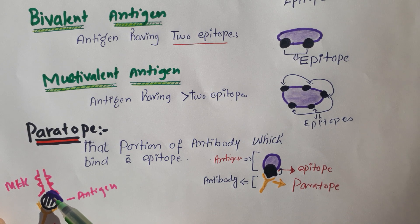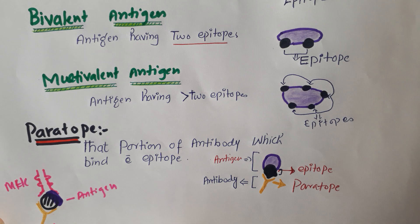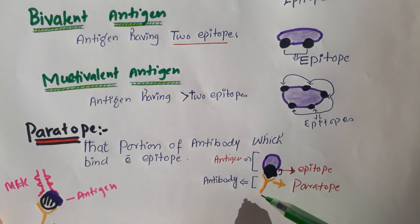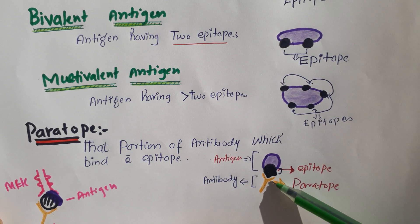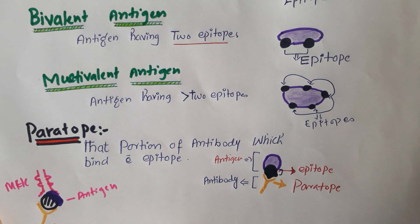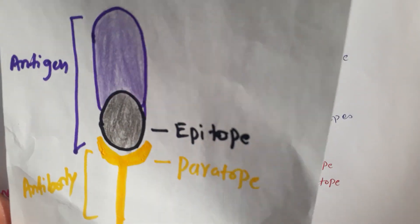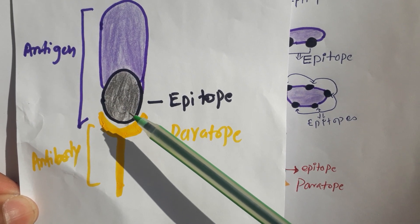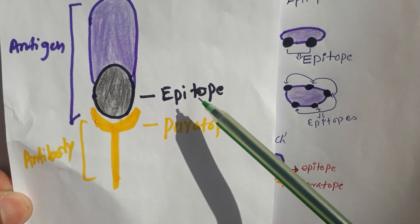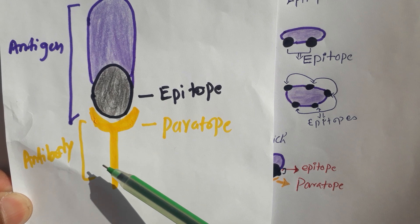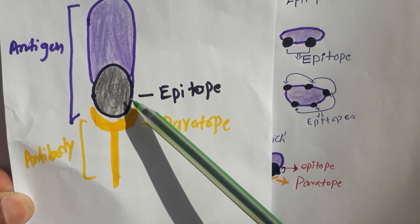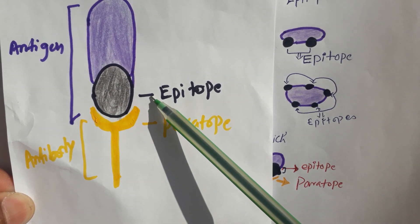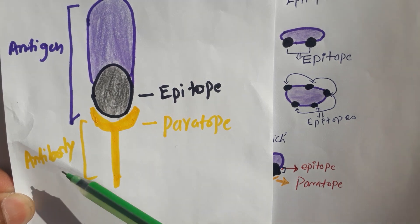To summarize: that portion of antigen which activates the immune response is called epitope, and that portion of the antibody which attaches with the epitope is called paratope. Here you can see in this simple diagram — this whole is the antigen, and this part of the antigen which activates the immune response or attaches with the antibody is called epitope. This whole is the antibody, and that part of the antibody which attaches with the epitope is called paratope. Remember: epitope is a part of antigen; paratope is a part of antibody.